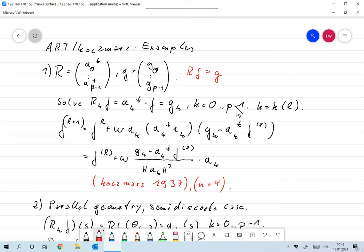Now, what would Kaczmarz method for this setting be? Well, for every L, choose a linear equation, choose one of the equations Rkf equals Ak transpose F equals Gk. So for each L, choose a K equal to K of L, and now apply Kaczmarz method with that K.